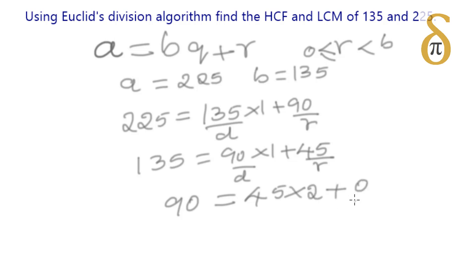If you get the remainder 0, stop the process and the divisor itself is the HCF. Hence the HCF of 135 and 225 is 45.